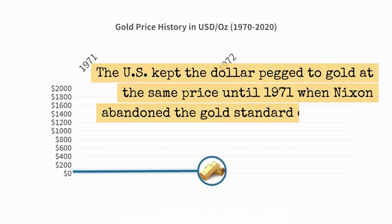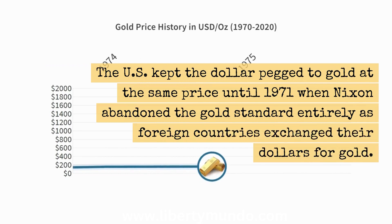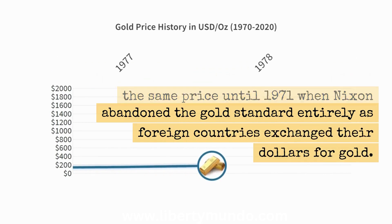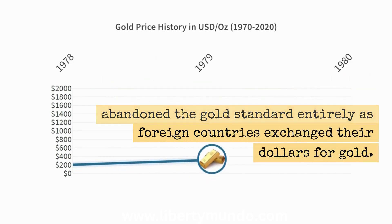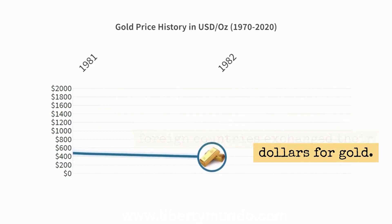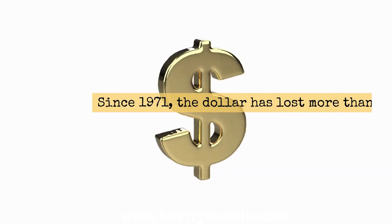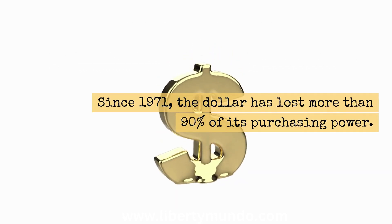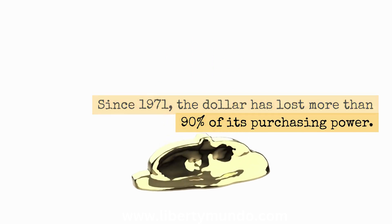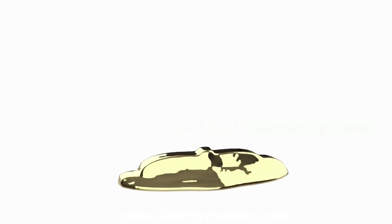The US kept the dollar pegged to gold at the same price until 1971, when Nixon abandoned the gold standard entirely as foreign countries exchanged their dollars for gold. Since 1971, the dollar has lost more than 90% of its purchasing power.